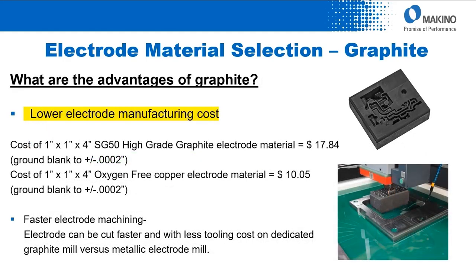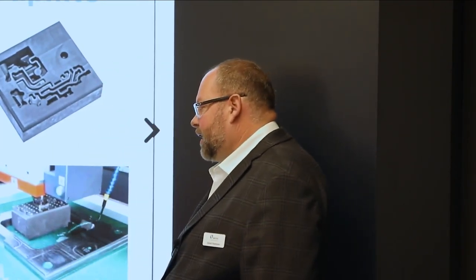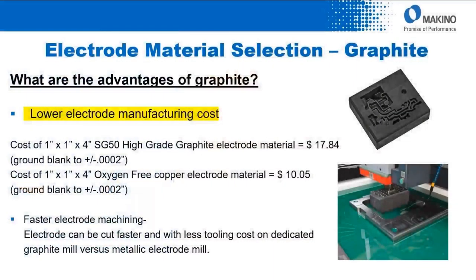Lower electrode manufacturing cost is another advantage. For that same 1x1x4 electrode in SG50, it's about $18 on average to make. Using oxygen-free copper, you're at $105 — pretty expensive for electrode material. On the electrode machining side, you'll machine graphite much faster than a metallic electrode and won't go through as much tooling, adding more cost to copper versus graphite.